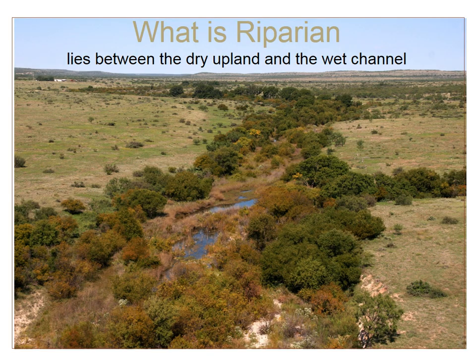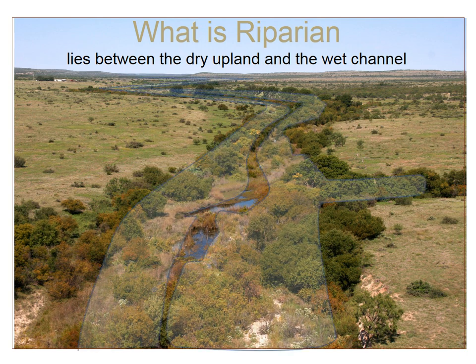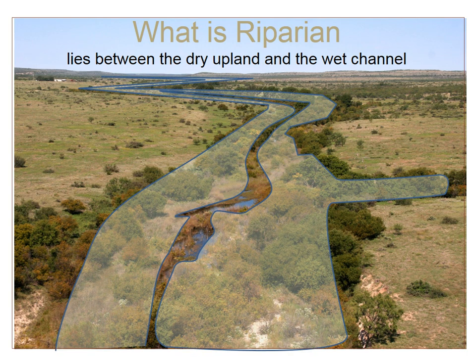A riparian area is the part of the landscape that flanks rivers and streams, shown in blue on this picture. It does not include the channel or the water. It is the land that lies between the drier uplands and the wetted channel. Sometimes the riparian areas stand out as the greener, more lush area, much in contrast to the less green uplands. Poetically, it can be thought of as a ribbon of land that follows and interacts with the waterway.